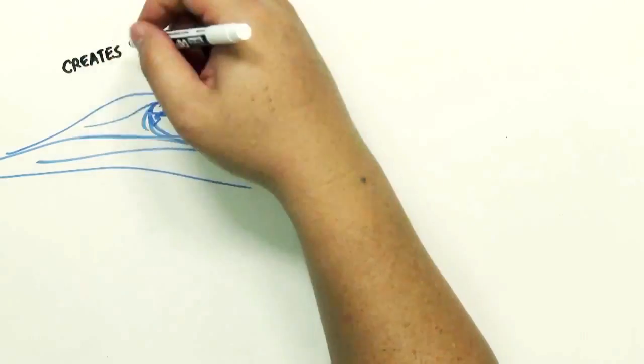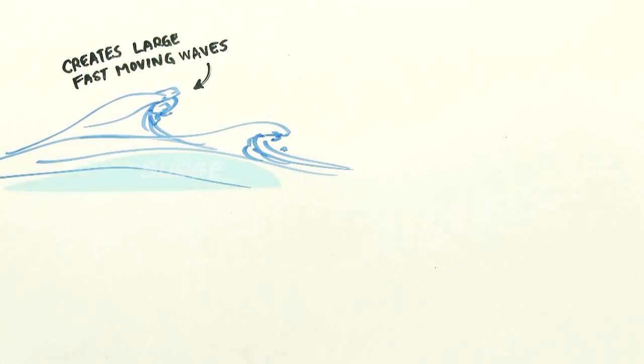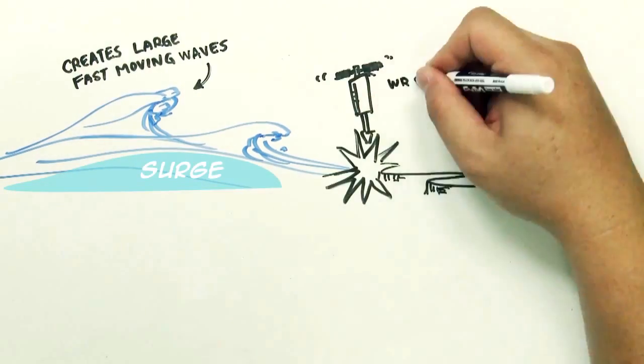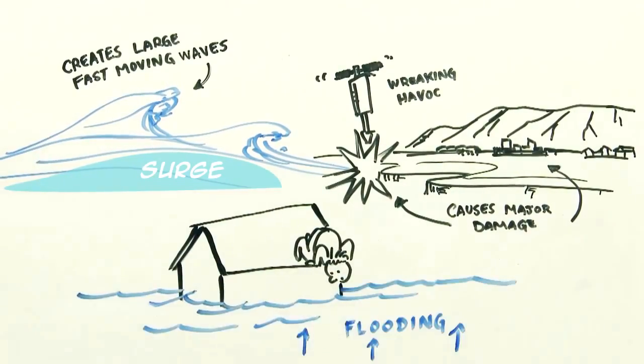In addition, large and destructive waves ride in on the top of the surge. These water surges then wreak havoc and can cause major damage and flooding many miles from the storm.